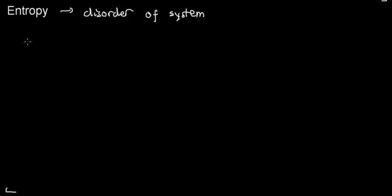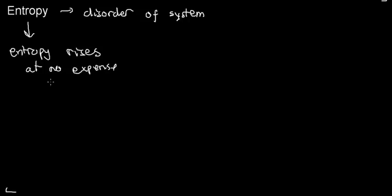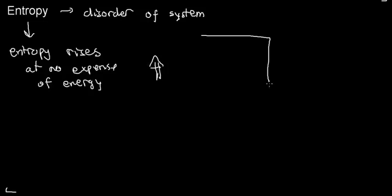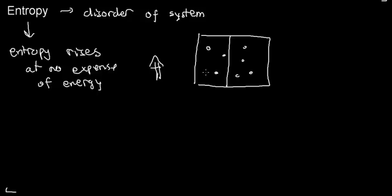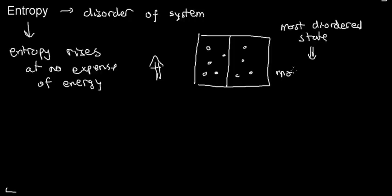Entropy rises at random — it rises at no expense of energy. That means at any given point the entropy of a system will just increase; every system gets more and more disordered. A state in which all particles are on one side is a very ordered state — everything is neat and packed in one place. When all particles are diffused throughout, that is a more disordered state. And that is why the most disordered state is the most probable.